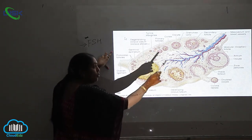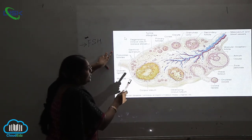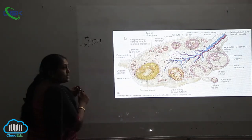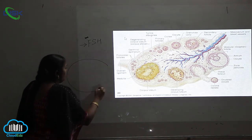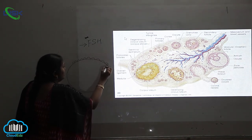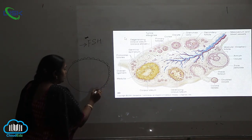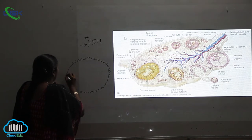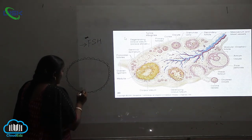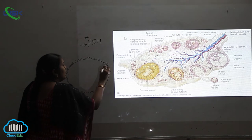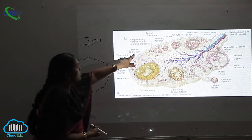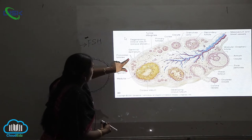The ovary has a somewhat oblong or leaf-like shape. Just as we discussed for the testes, here in the ovary the outermost layer has scattered cells, which we call the germinal epithelium. These cells form the germ cells essential for the development of female gametes. This germinal layer is the outermost region.